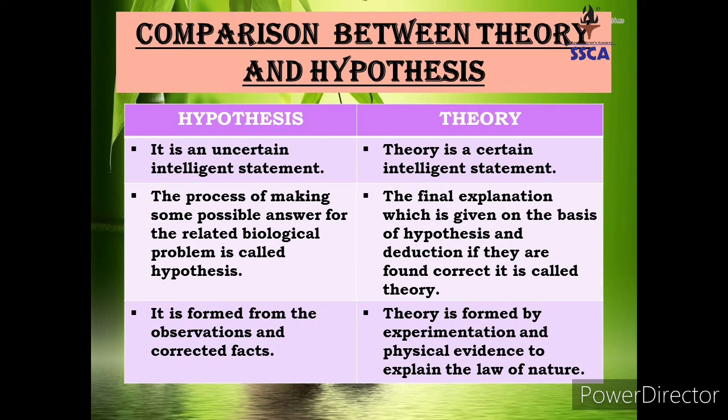Hypothesis is formed from the observations and collected facts — مطلب hypothesis tab create کرتے ہیں جب کسی problem کے بارے میں information collect کر کے حقائق جان سکیں۔ Theory is formed by the experimentation and physical evidences — theory تب create کی جاتی ہے after experimentation، جب تک experiment کر کے results find out نہ کر لیں اور evidences نہ آ جائیں، tab تک theory represent نہیں کرتے۔